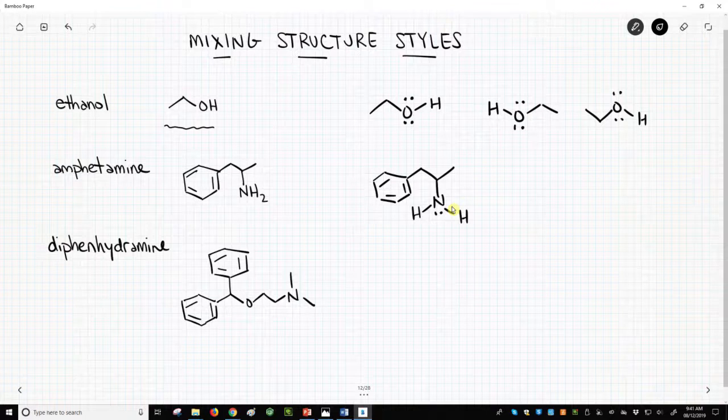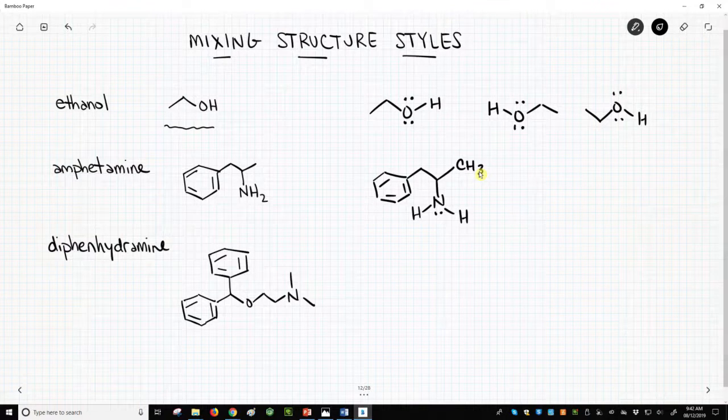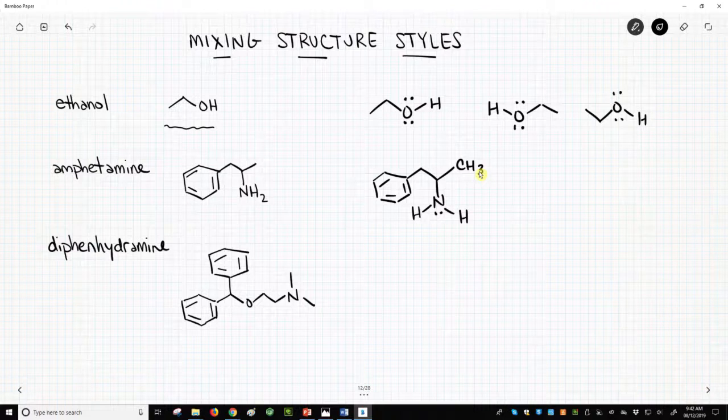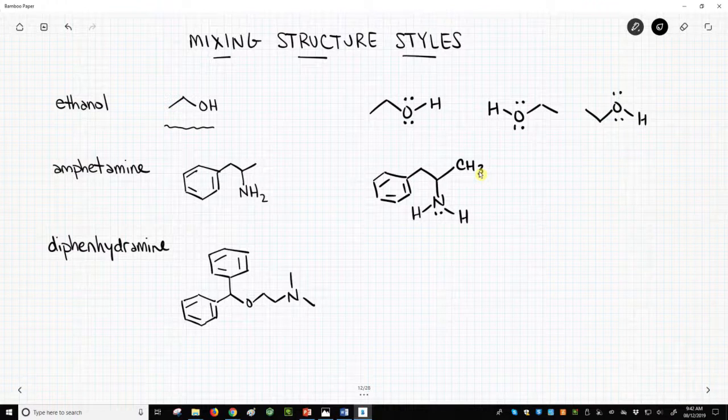Note that I have also labeled the end carbon as a CH3 group explicitly. It is very common for people to label end carbons as CH3 groups. This combines elements from line-angle structures, Lewis-dot structures, and even condensed structural formulas.